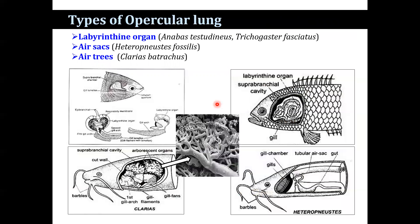In Anabas testudineus and Trichogaster fasciatus, the labyrinthine organ is present. In Anabas testudineus, the air-breathing organ consists of a spacious air chamber on either side of the skull, lying between the first gill arch and the hyomandibular arch. The labyrinthine organ develops from the epibranchial segment of the first gill arch and consists of three concentrically arranged bony plates. The first plate is fused with the epithelium lining the air chamber, while the second and third plates are much folded and highly complex, covered with vascular epithelium. It serves to increase the area for absorption of oxygen.